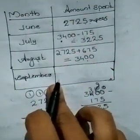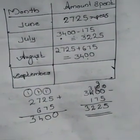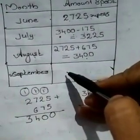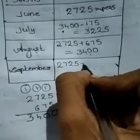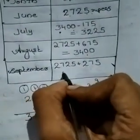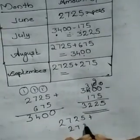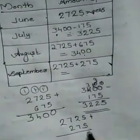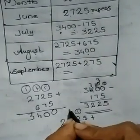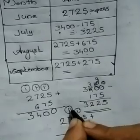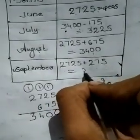What about September? The amount spent in September is 275 more than the amount in June. June amount is 2,725 plus 275. 5 plus 5 is 10 — write 0 carry 1; 7 plus 2 is 9, plus 1 is 10 — write 0 carry 1; 7 plus 2 is 9, plus 1 is 10 — write 0 carry 1; 2 plus 1 is 3. The answer is 3,000.